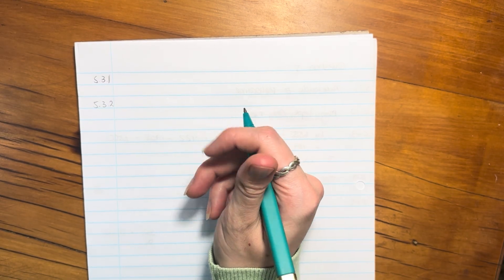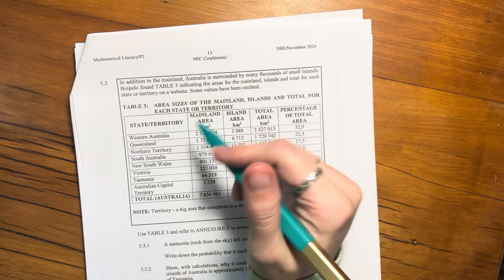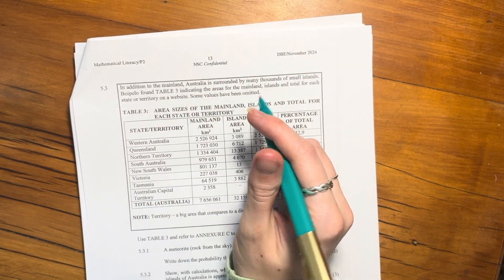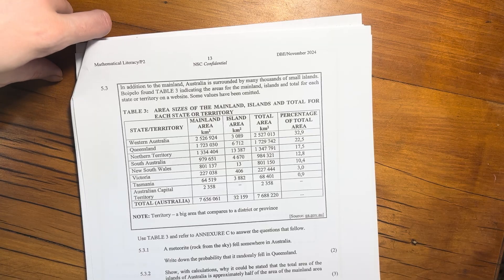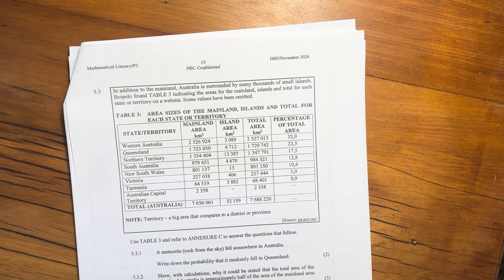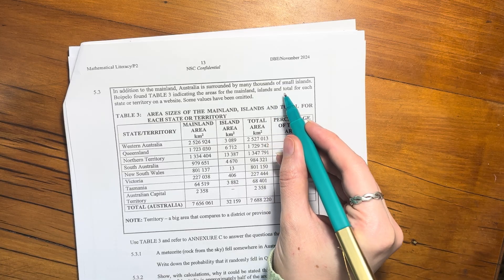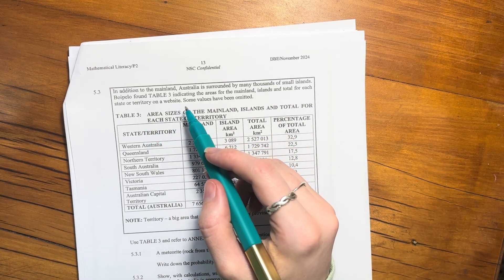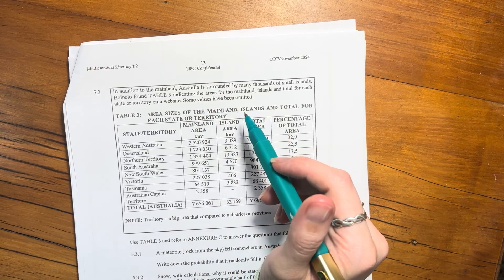Alright, we're going to do 5.4.3, which is our last question for this paper. So in addition to the mainland, Australia is surrounded by many thousands of small islands. Boipelo found Table 3, indicating the areas for the mainland, islands, and total for each state or territory on a website. Some values have been omitted.